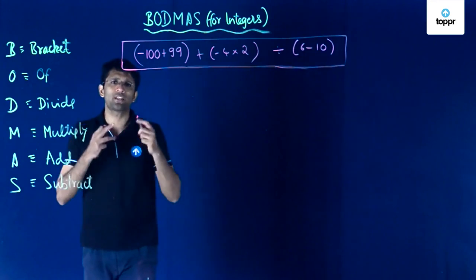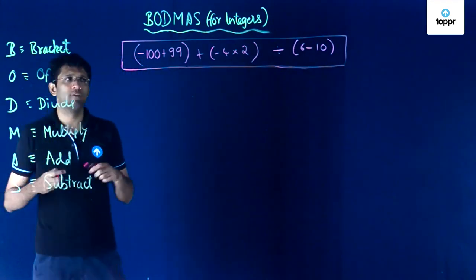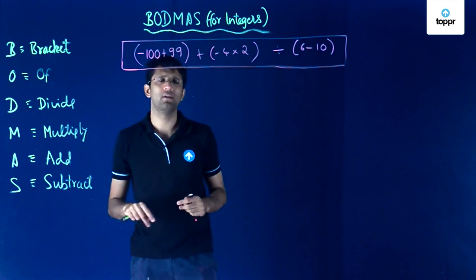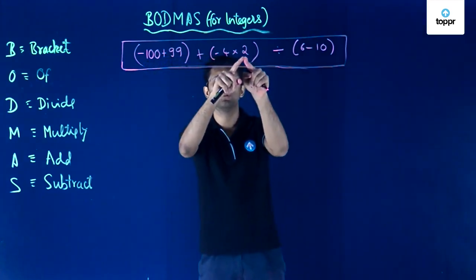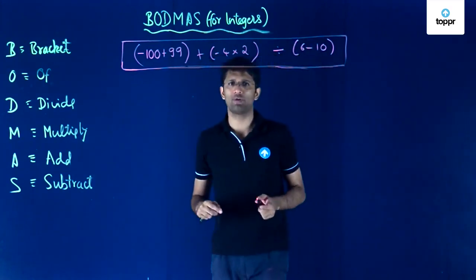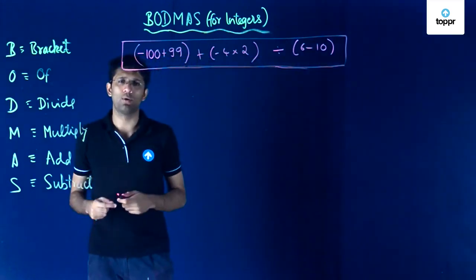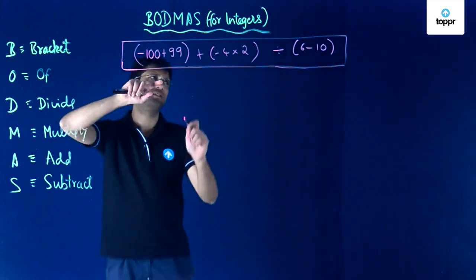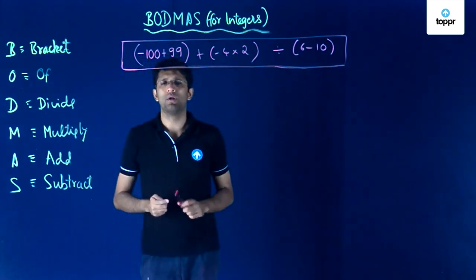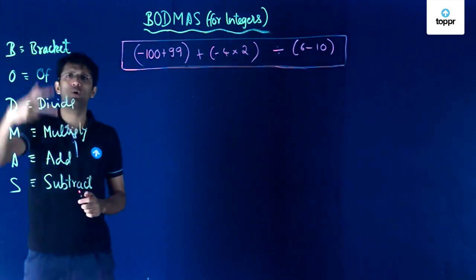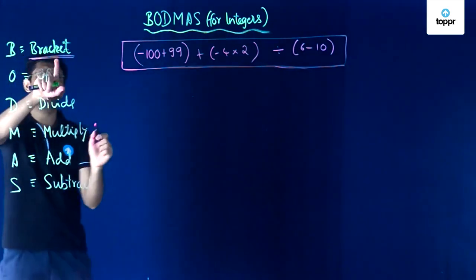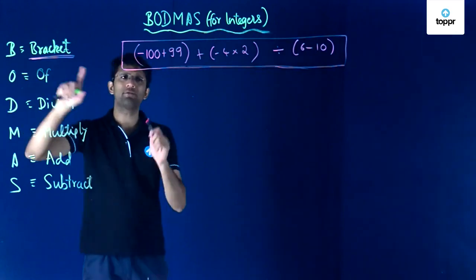Let us now see another expression that can be solved using the BODMAS method. The first bracket contains minus 100 plus 99, which is added to another bracket containing minus 4 into 2. Then there is a division sign followed by a bracket containing 6 minus 10. Again in this expression there are many operators: division, multiplication, addition, subtraction, and brackets. Because there are multiple operators, we need to follow BODMAS to understand which operator to apply first, and so we will always resolve the brackets first.